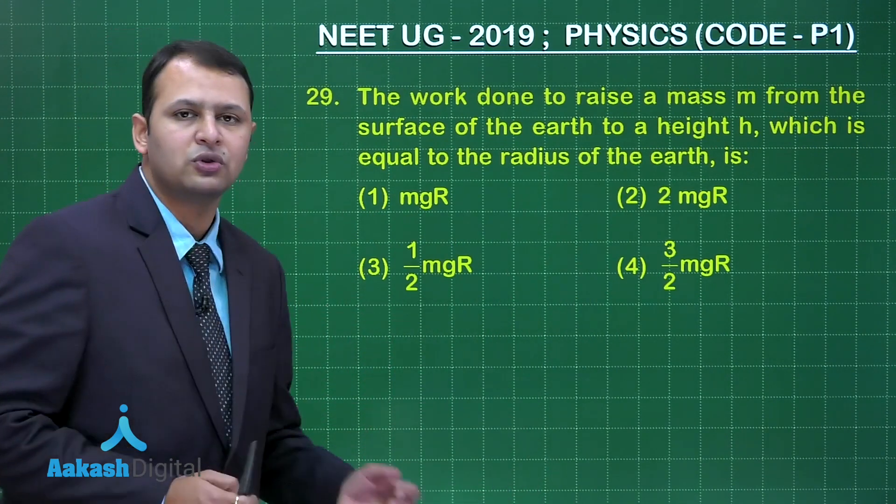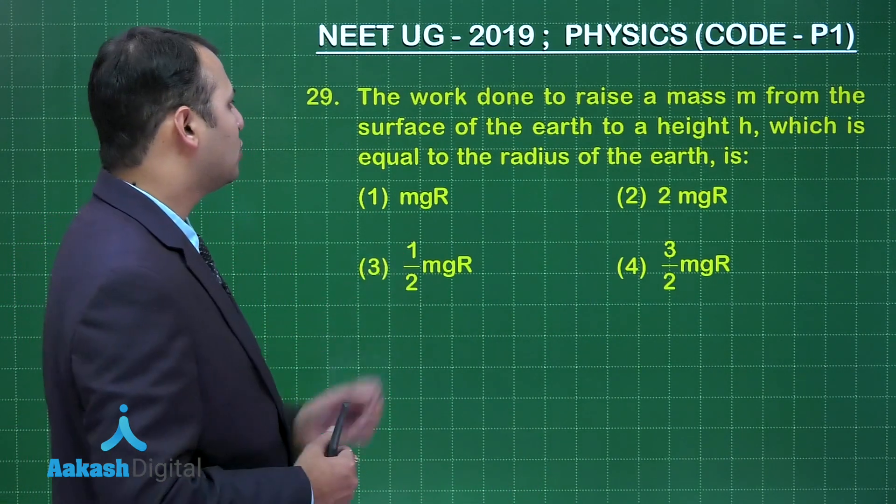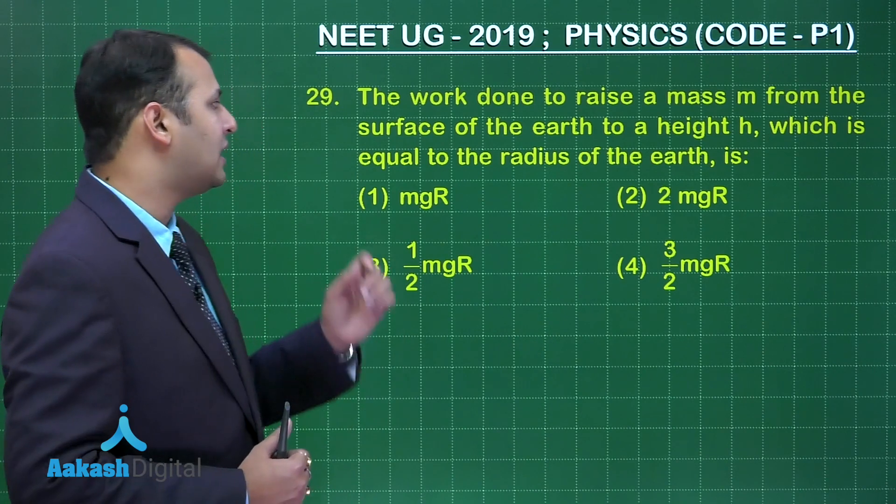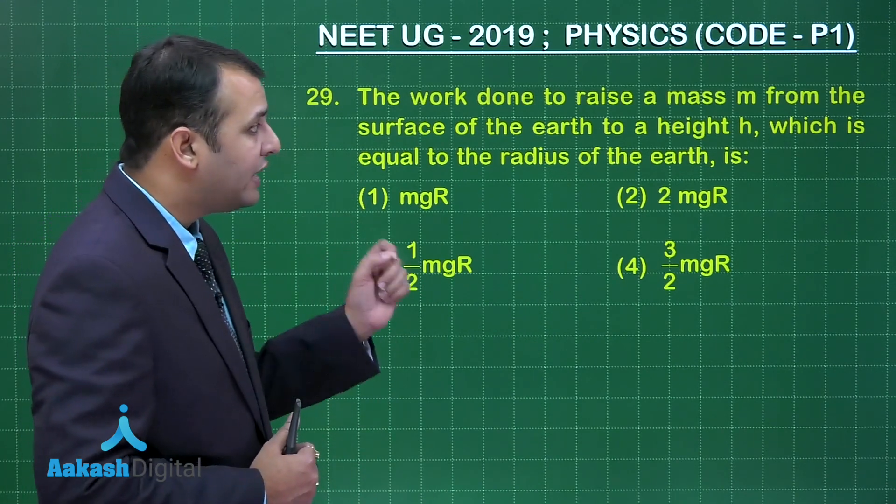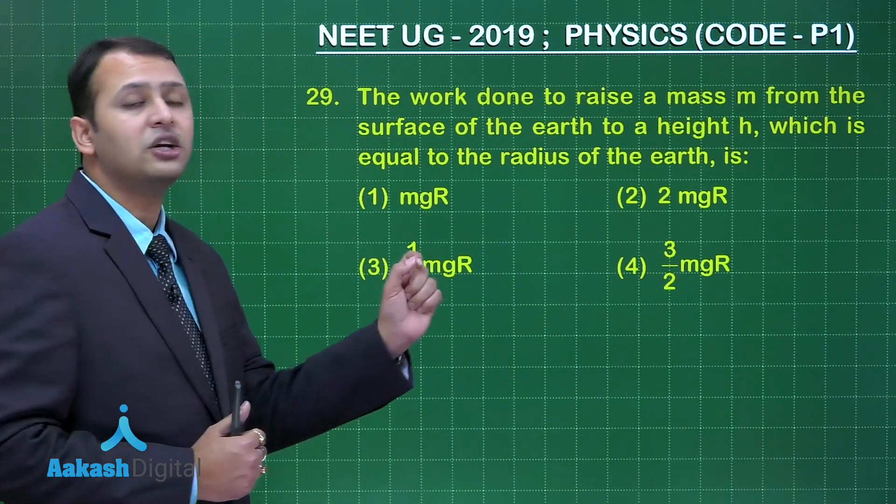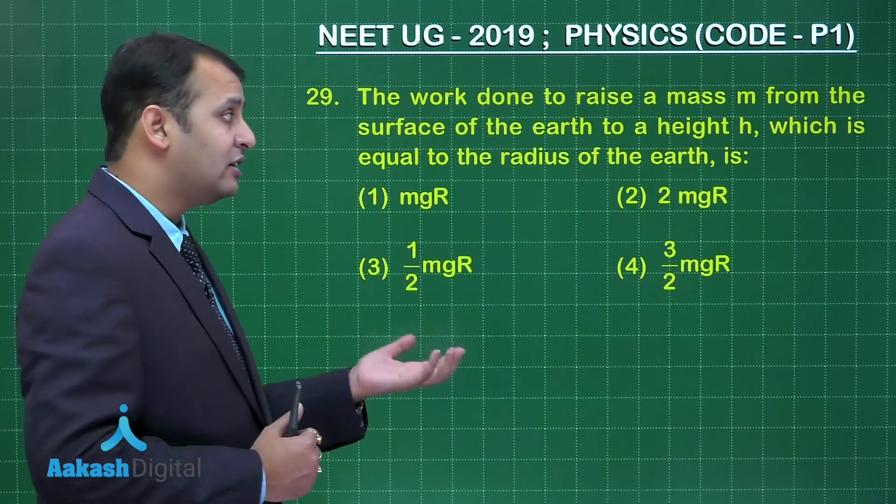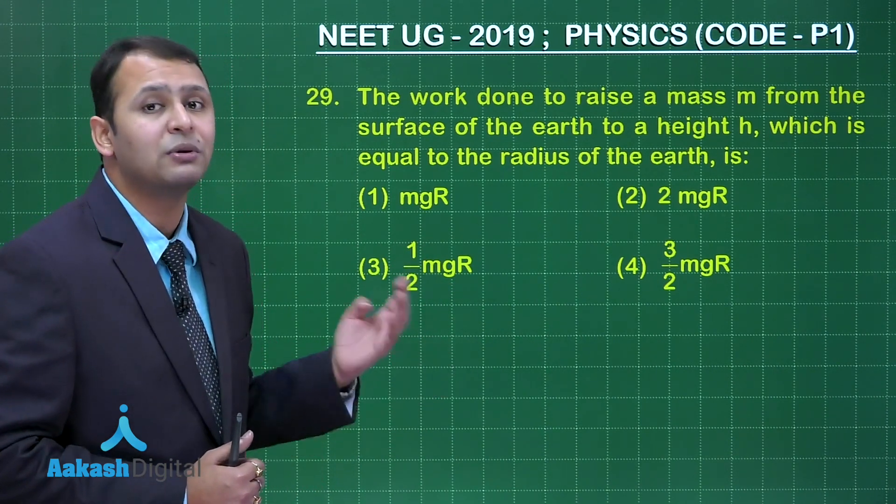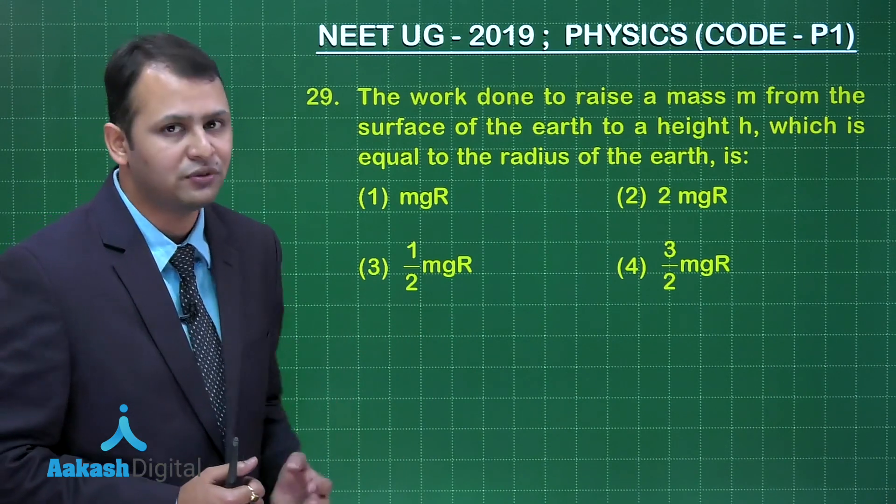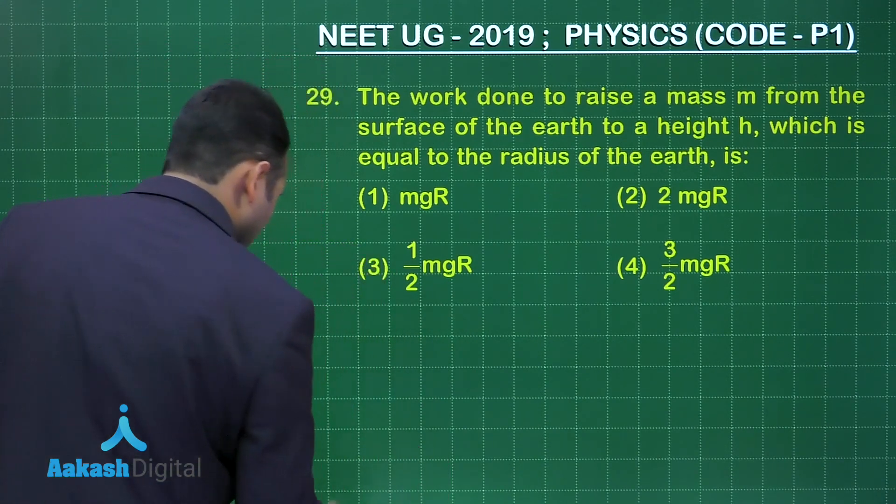The question belongs to chapter Gravitation. As per the question, work done to raise a mass m from surface of earth to a height h which is equal to the radius of earth. Certainly the formula mgh will not work here because the height is comparable to radius of earth. In that case you need to solve in this manner.